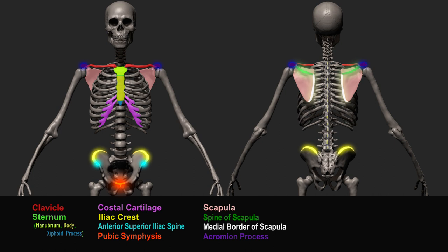The bony marks that you see at the back of someone very thin are the thoracic spinal processes — marks that are visible on people who lack body fat. The dimples that you see above someone's butt are called the posterior superior iliac spine, and they serve as a great guide for locating the pelvis bone.